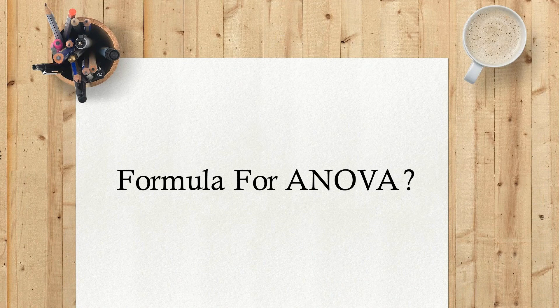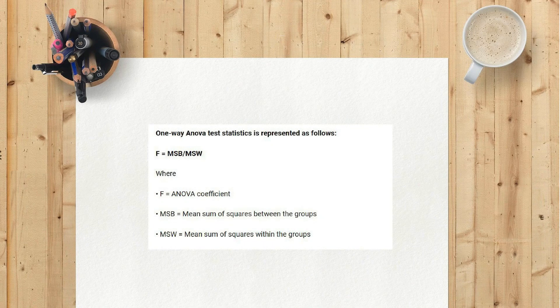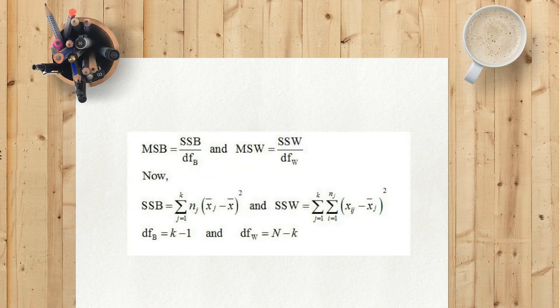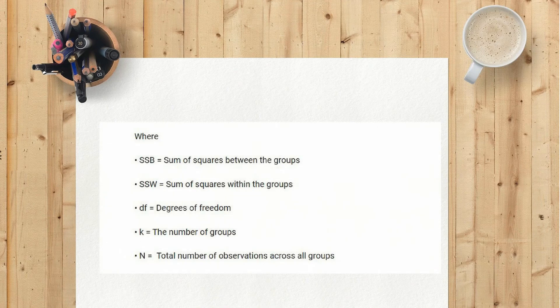Formula for ANOVA. One-way ANOVA test statistics is represented as follows: F equals MSB divided by MSW, where F equals the ANOVA coefficient, MSB equals mean sum of squares between the groups, and MSW equals mean sum of squares within the groups. SSB equals sum of squares between the groups, SSW equals sum of squares within the groups, DF equals degree of freedom, K equals the number of groups, and N equals total number of observations across all groups.